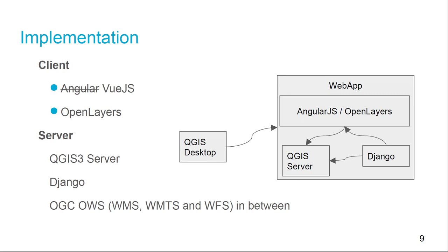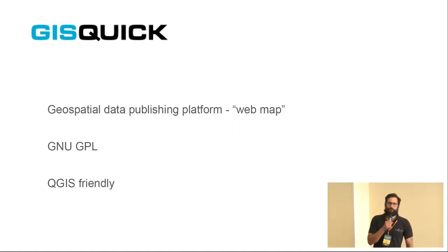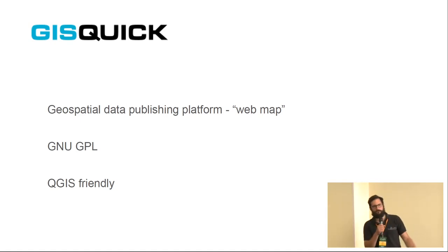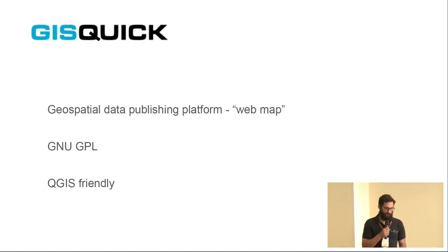I've heard a bunch of talks here at FOSS4G about GeoAPI — we will probably have to move that way as well. But so far we use WMS and mainly WFS for data exchange. We came up with a product called GIS Quick, for the speed. It's a geospatial data publishing platform, or web mapping application. It uses a GNU GPL license, because we built on QGIS and want to be compatible with that licensing model. It should be as QGIS-friendly as possible from the user's perspective.